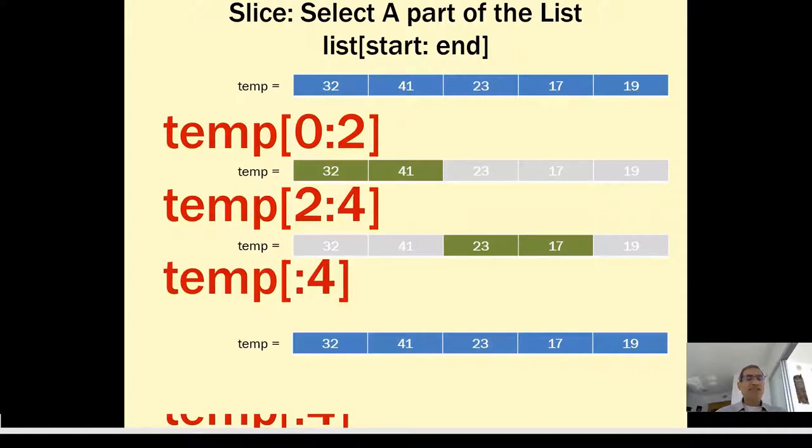And finally, you can say temp[:4]. Let us start from the beginning and go until but not including 4. So include 0, 1, 2, 3. So we get 32, 41, 23, 17 but not 19.